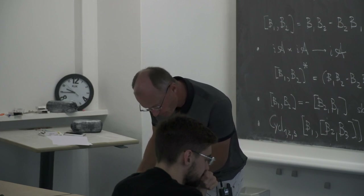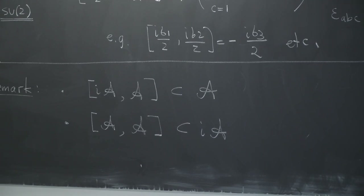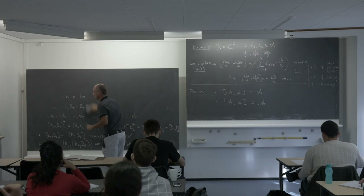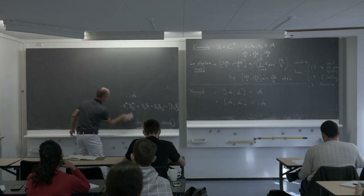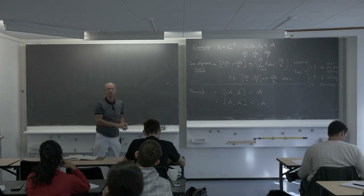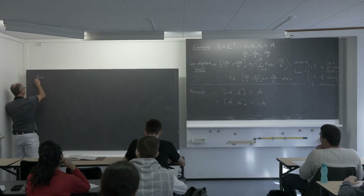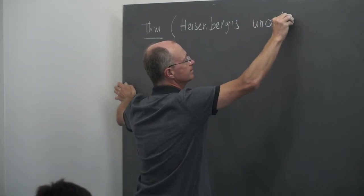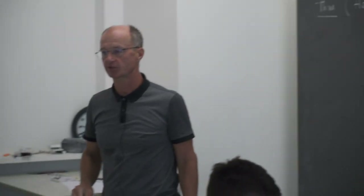Now I want to formulate a quite fundamental theorem — probably the first statement we call a theorem in this course. This theorem is called the Heisenberg uncertainty relation.